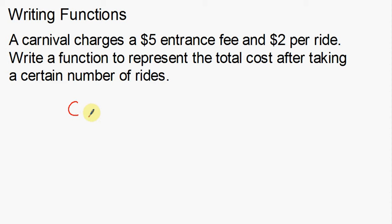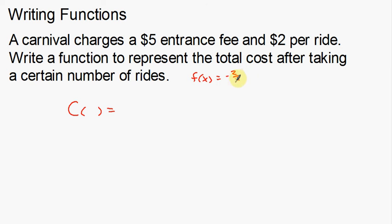The C stands for the cost of the carnival trip. Now when I start my function notation, I not only start with the label — so C is my label — but I also have to state what variable I'm going to use. C of what? So let's write back up there: f of x is equal to negative two-thirds x plus 5. That's what function notation looks like.